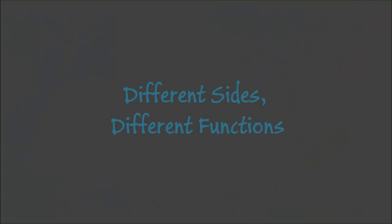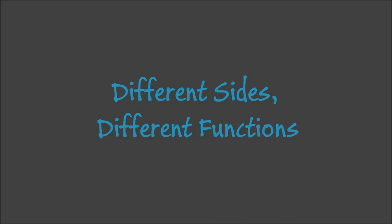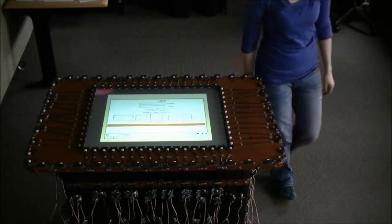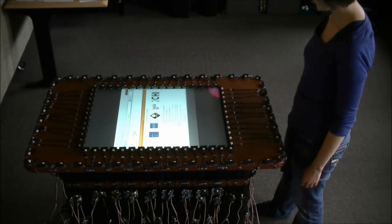ProxySketch also assigns different functionality to different sides of the tabletop. Here, the user can transition between low and high fidelity prototypes by simply walking to another side of the table, giving them a fresh point of view.